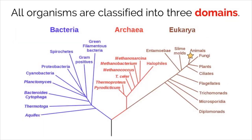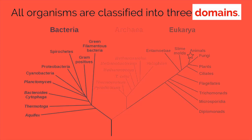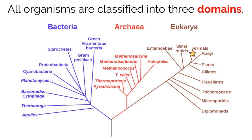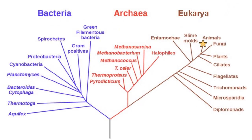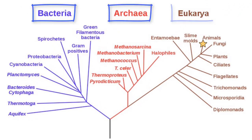The binomial naming system helps scientists classify organisms into their specific place on the evolutionary tree. But before scientists get specific, they start classifying organisms into much larger, broader domains. The three domains that scientists classify organisms into are bacteria, archaea, and eukarya.